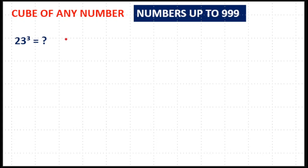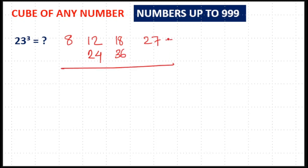Next is 23 cube. 2 cube is 8, 3 cube is 27. 2² × 3 = 4 × 3 = 12, and 3² × 2 = 9 × 2 = 18. Doubling: 2 × 12 = 24, 18 × 2 = 36. Calculating: write 7, carry 2; 18 + 2 = 20, 20 + 36 = 56 — write 6, carry 5; 24 + 12 = 36, 36 + 5 = 41 — write 1, carry 4; 8 + 4 = 12. So the answer is 12167.